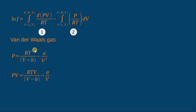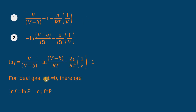For a van der Waals gas, P = RT/(V-b) - a/V², or PV = RTV/(V-b) - a/V. Integrating the first term and the second term and adding them, we get ln f equal to the RHS of this equation.